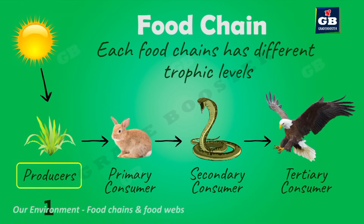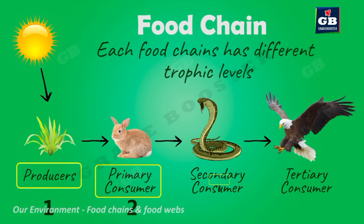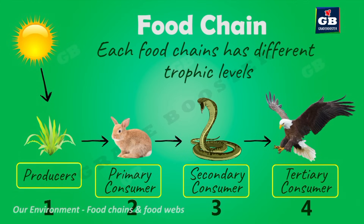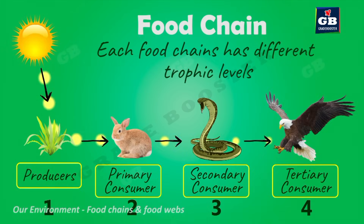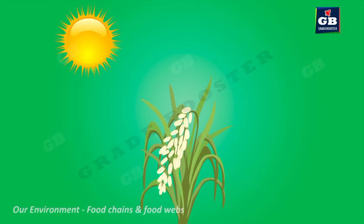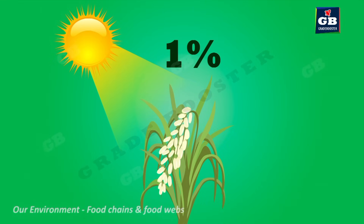Each food chain has different trophic levels. We find producers in the first trophic level, primary consumers in the second, secondary consumers in the third, and tertiary consumers in the fourth trophic level. In this food chain we can observe the flow of energy from one organism to another. A plant can convert only one percent of the total sunlight that falls on its leaves into food.